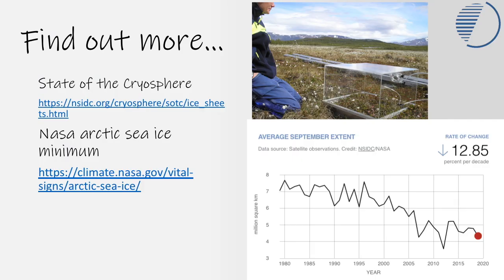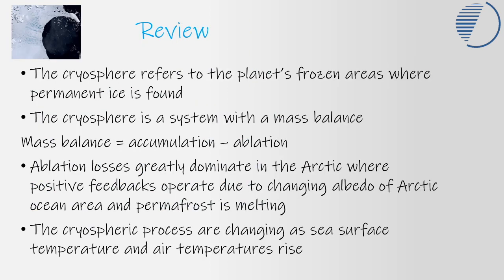To find out more, Google 'State of the Cryosphere' or 'NASA sea ice' for additional resources. In review: the cryosphere refers to all the snow and ice found on Earth. There is a mass balance between accumulation and ablation. Currently in the high Arctic, we have very high rates of ablation and more outputs than inputs, so water is moving from a solid to a liquid state — in permafrost and in sea ice. Cryospheric processes of the water cycle are therefore becoming increasingly important, especially in explaining the link between the water cycle and the carbon cycle on Earth.